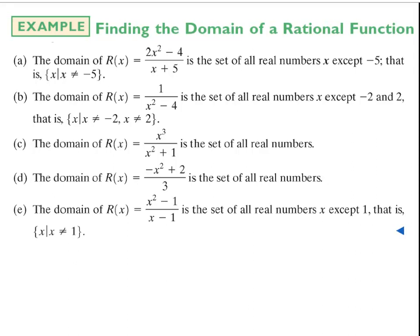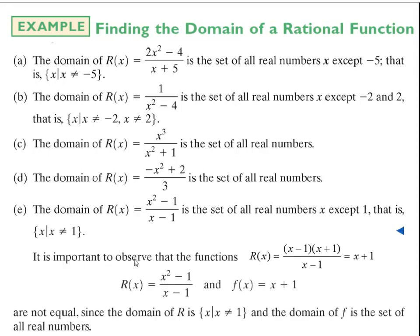Our next example is (x² - 1) / (x - 1). We notice x - 1 = 0 gives x = 1, so x cannot equal 1. Now, something important to notice: the numerator factors as (x - 1)(x + 1), and the (x - 1) factor would cancel with the denominator. So this rational function, if simplified, would turn out to be the line x + 1.